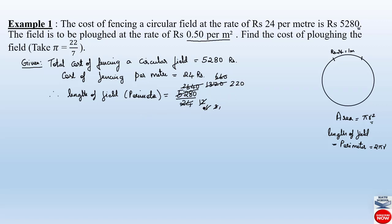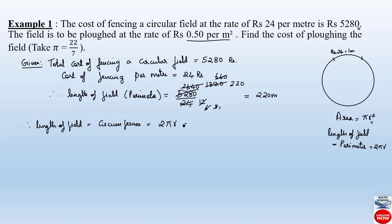That equals 220. So the length of this full circular field is 220 meters, which is nothing but the perimeter or circumference of the circle. Therefore the length of the field equals the circumference, which is 2πr, and we got the value as 220 meters.